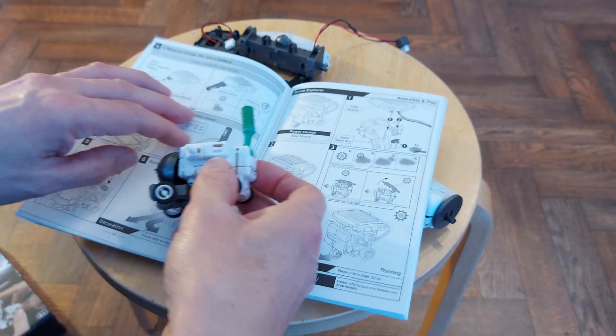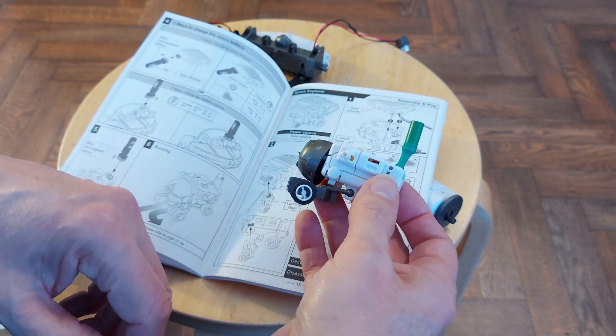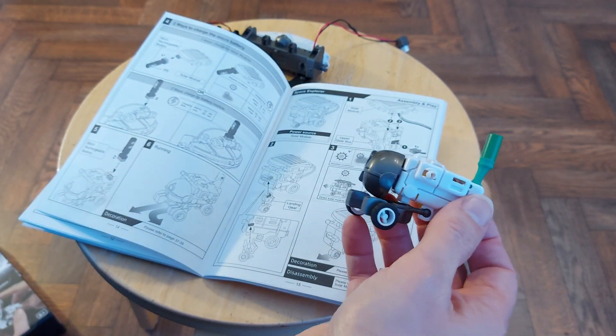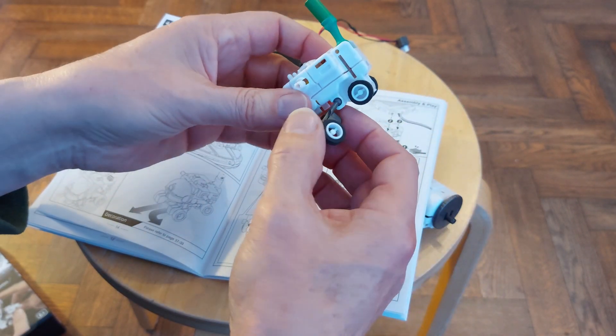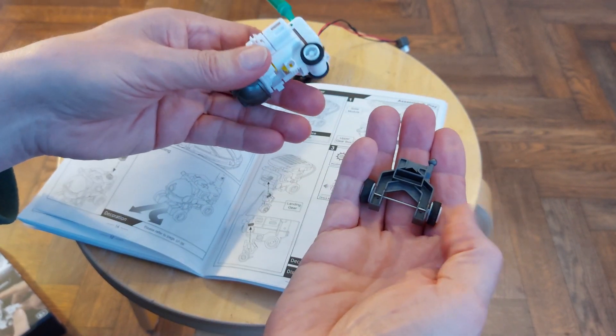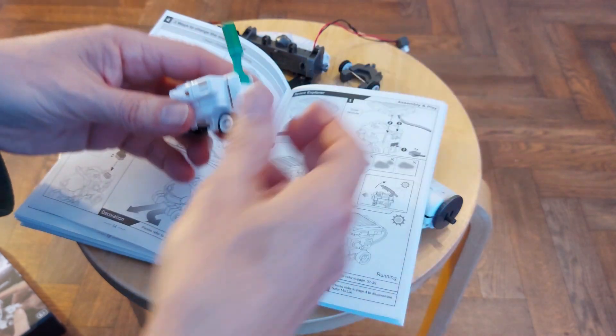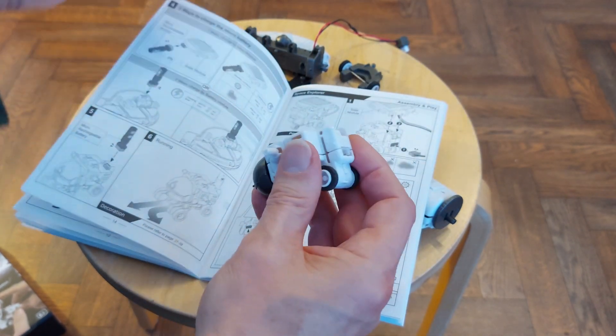What we're now going to do is the Space Explorer, which is very similar. This one uses those for front wheels. I'll take the supercapacitor off.